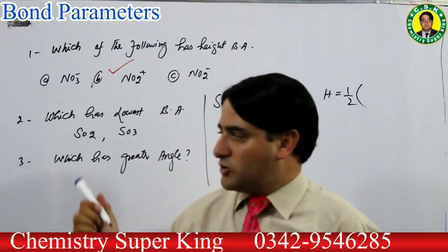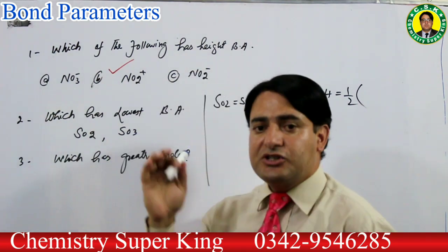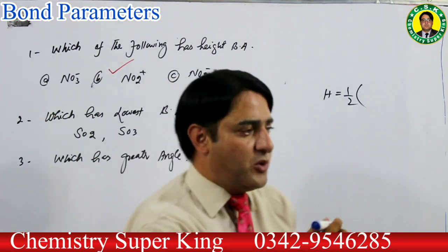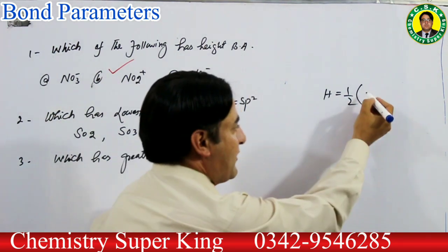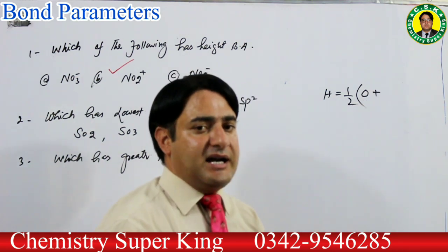SO3 کا bond angle 120° ہوگا اور SO2 کا 120° سے کم ہوگا۔